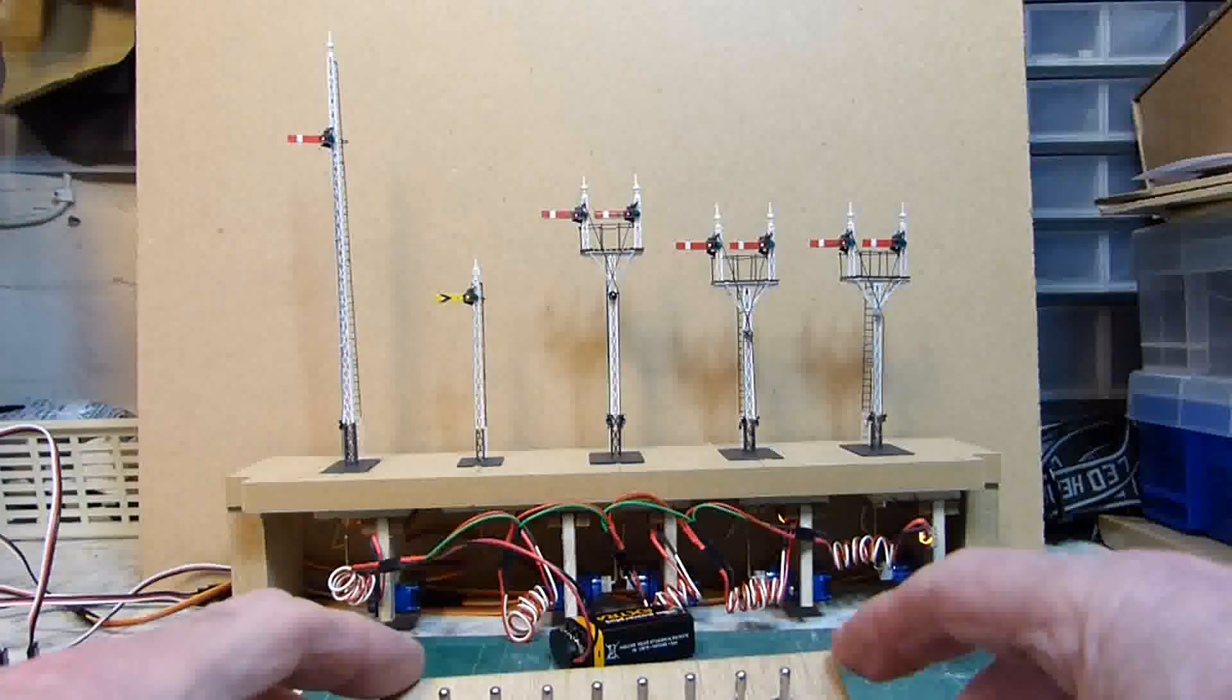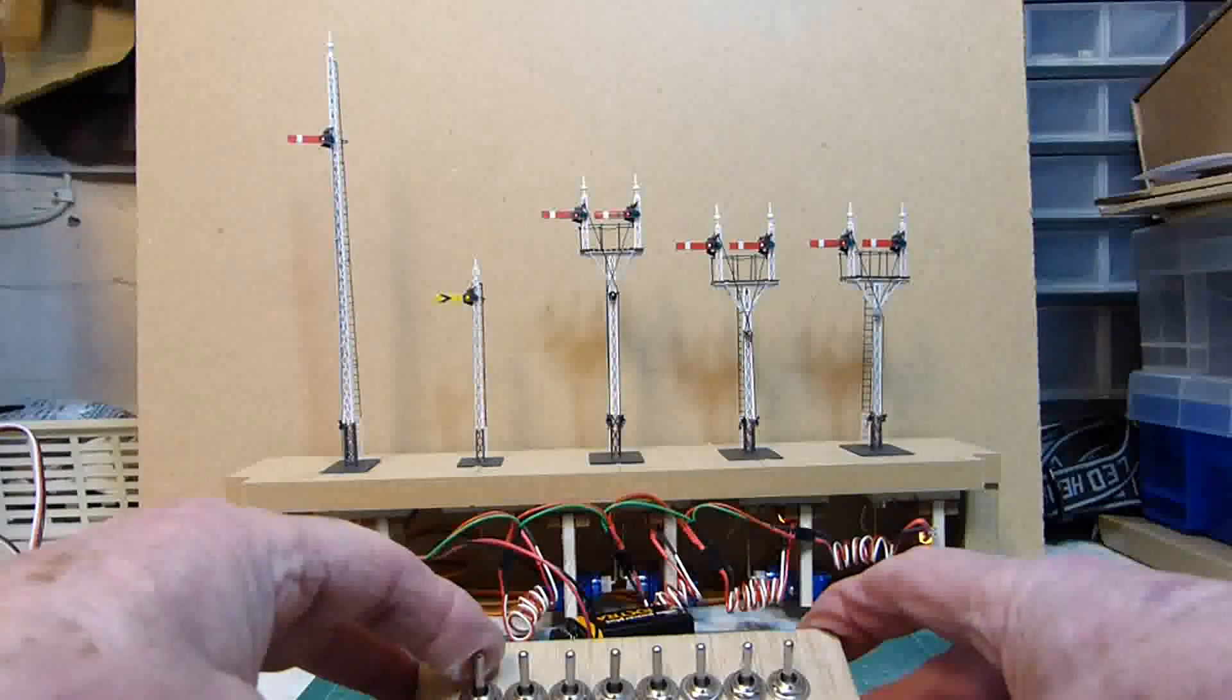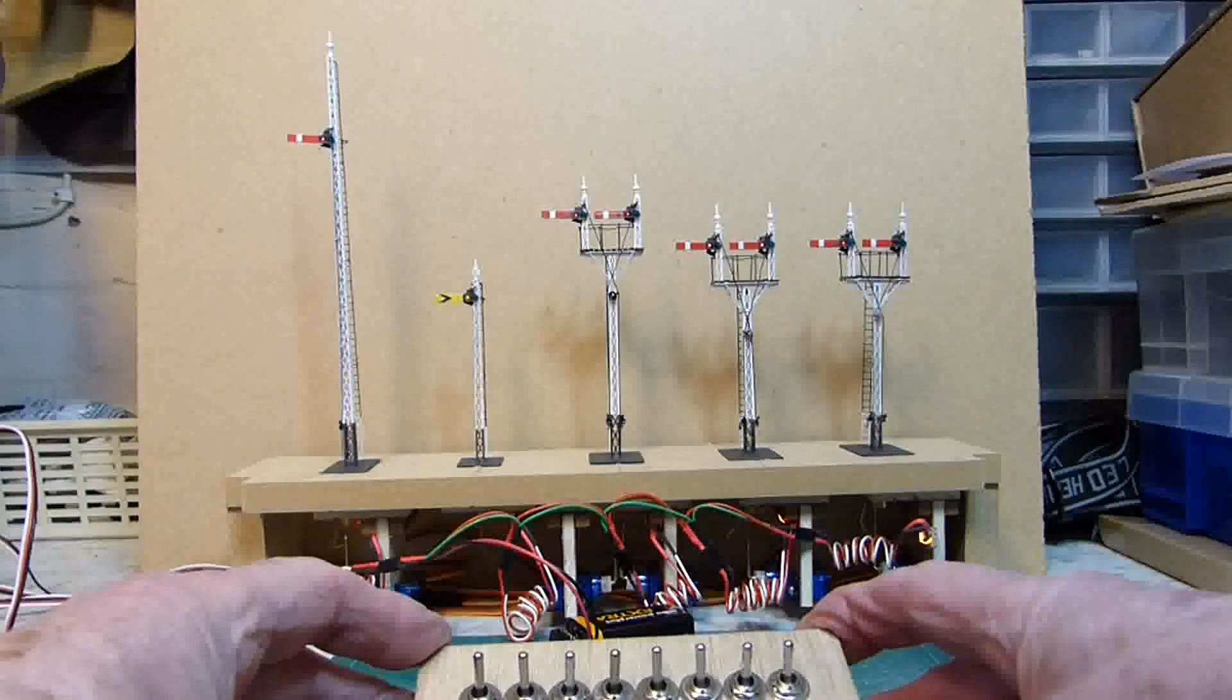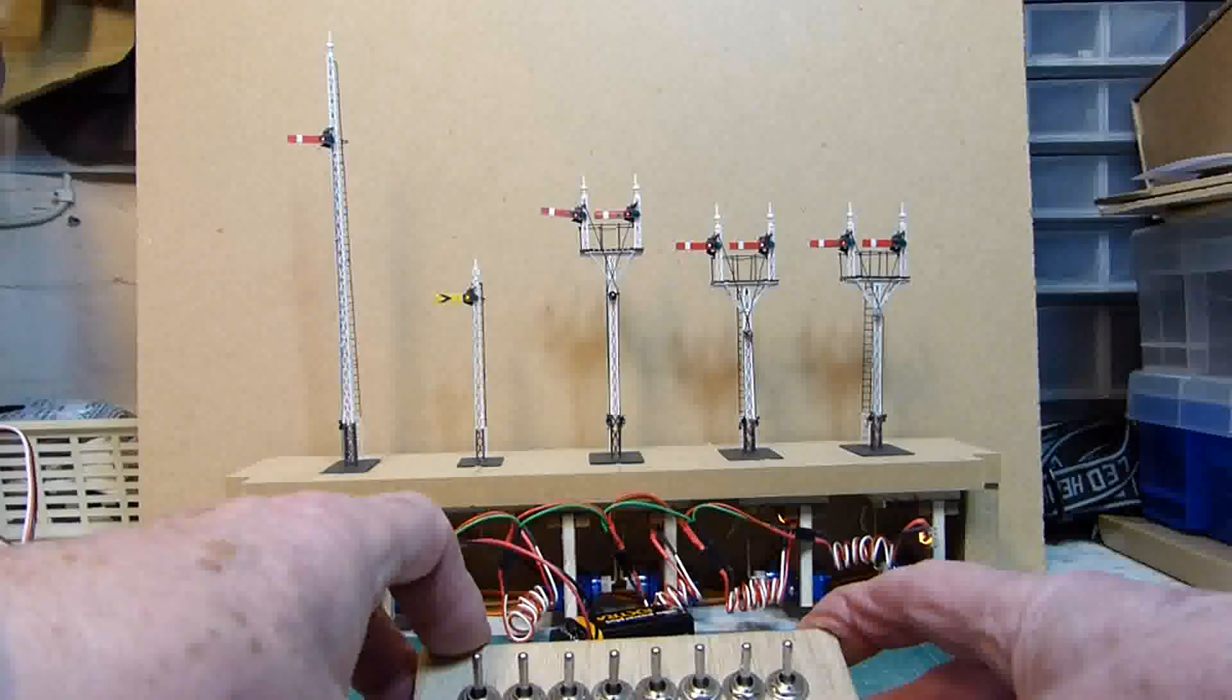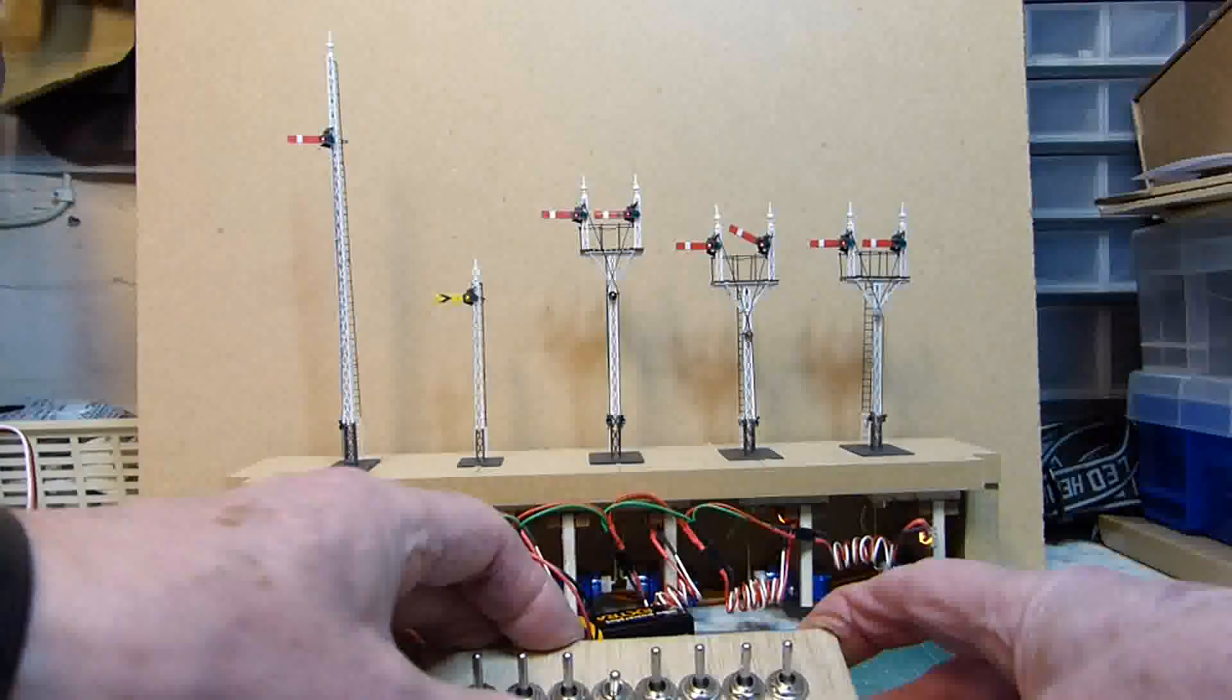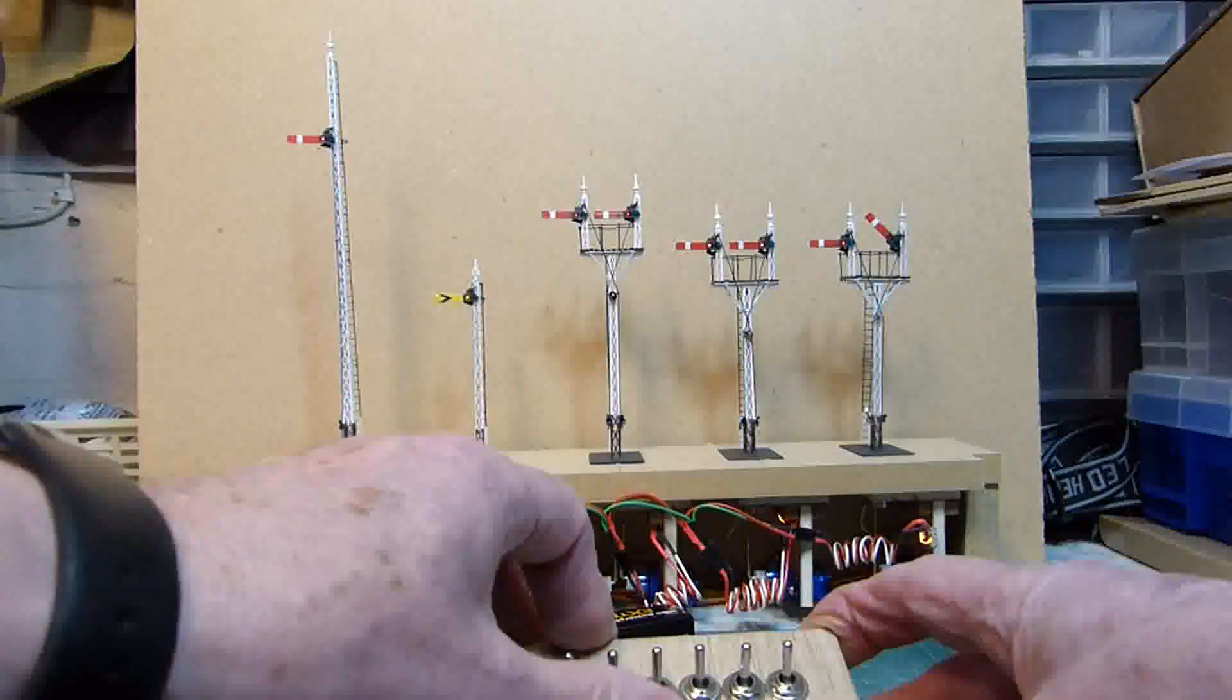Now that the power is connected without any twitch on the servo you'll notice, we can now using the simple on off switches test the signals out. Number one, back to danger. Number two, back to danger. Number three, back to danger. Number four, back to danger. And number five, back to danger.